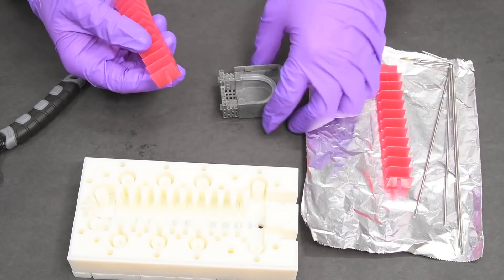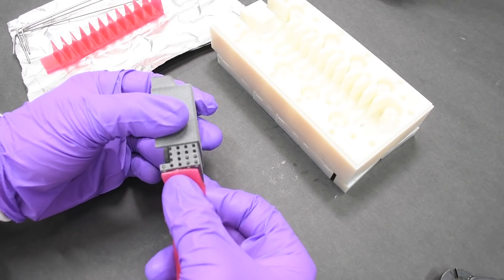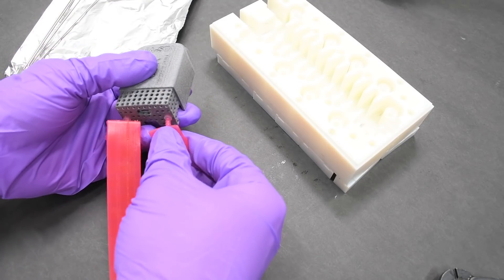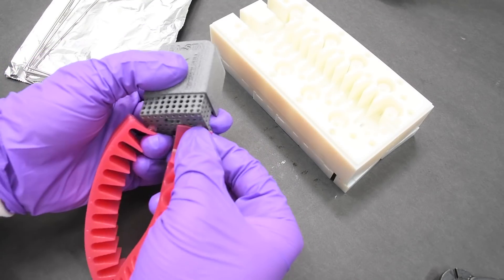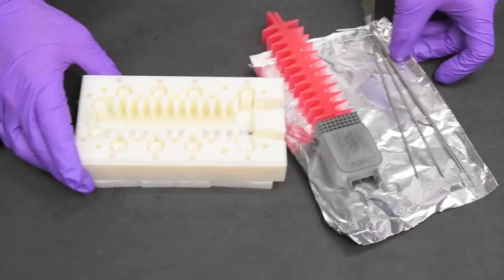Now we take the soft cores and the cap assembly, and we insert the soft cores into the silicone tubing to plug it. We align them next to each other, and then we insert them into the mold.